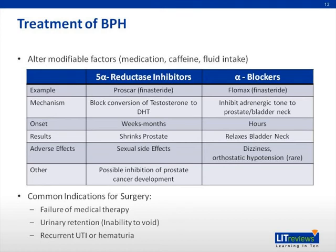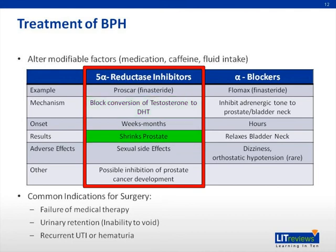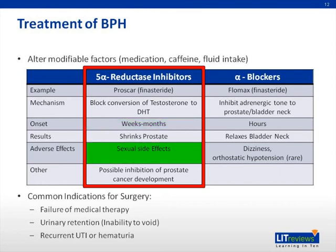There are two main classes of medications. First, 5-alpha reductase inhibitors, which block the conversion of testosterone to dihydrotestosterone. These actually decrease the size of the prostate, but they take a longer time to work — their onset is weeks to months. In addition, there are some sexual side effects, such as decreased libido, which have been associated with taking 5-alpha reductase inhibitors.